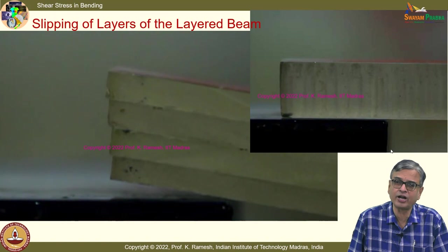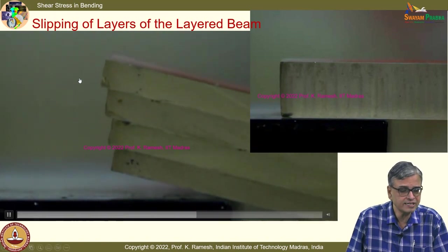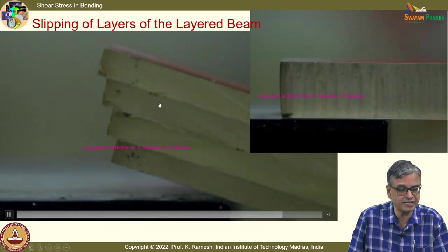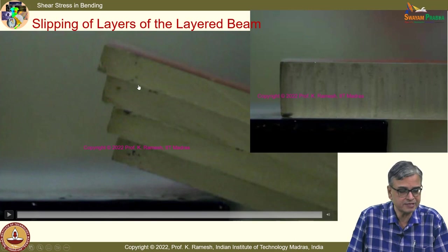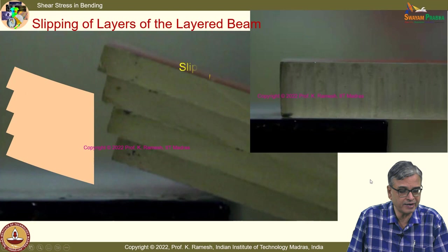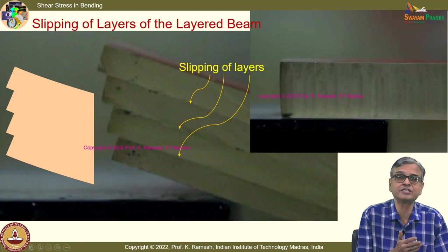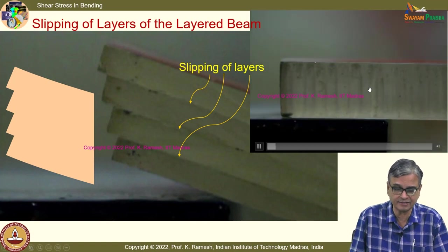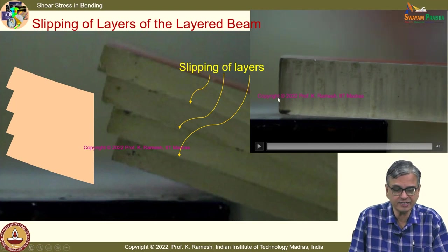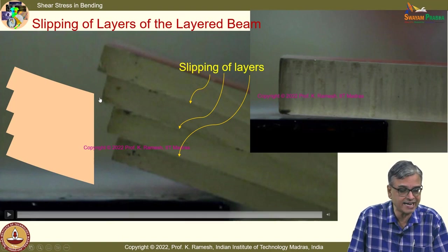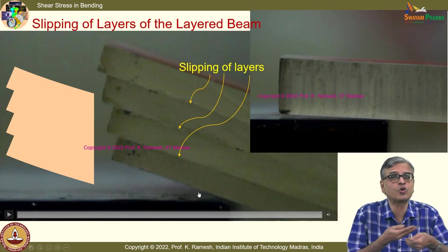One of the subtle points in bending is how shear gets developed. To understand this, we took a layered beam and found that the layers slip as loading is applied — you could very clearly see slipping of layers. You can imagine something is holding it, which is why the layers do not slip in a regular beam. The jagged edge clearly shows that something is holding the surface.